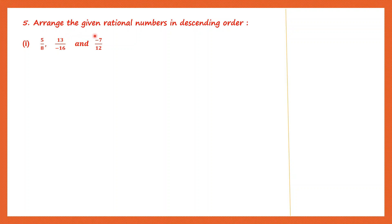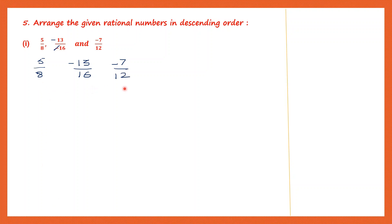Question 5: arrange the given rational numbers in descending order. We have 5 by 8, 13 by minus 16 and minus 7 by 12. The first thing we do is make all denominators positive. So 5 by 8 stays the same. The second rational number has a minus sign in the denominator — we'll remove it and put it in the numerator, so that becomes minus 13 by 16. The last one, minus 7 by 12, we write as it is.